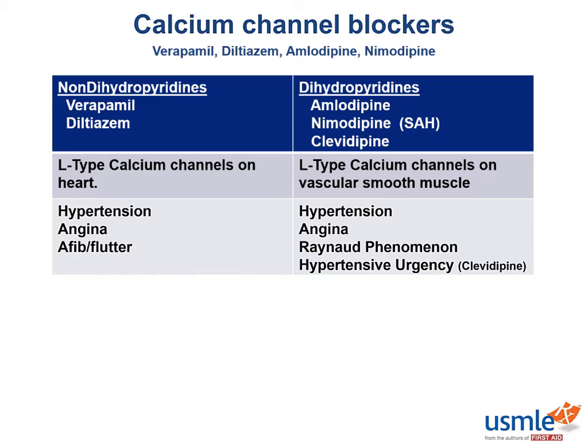Why do we want to decrease AV nodal conduction speed in the situation of AFib or AFlutter? That's because we do not want every single depolarization from the atria transmitted into the ventricles. Calcium channel blockers help increase the refractoriness of the AV node.